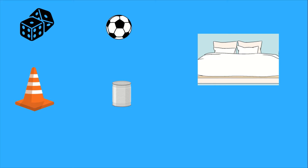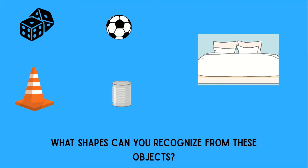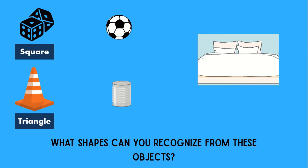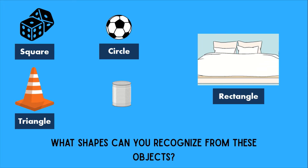What shapes can you recognize from the objects Tom saw in his bedroom? The dice figurine — very good, it's a square. The traffic cone — triangle. The soccer ball — circle. The bed — rectangle. And the coin bank can is also circle-shaped, as you can see on its top and bottom parts.